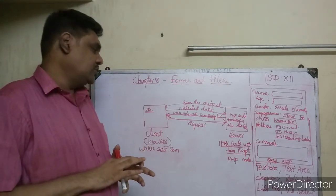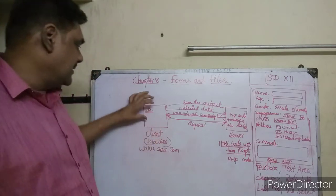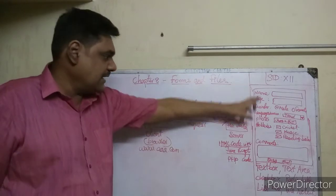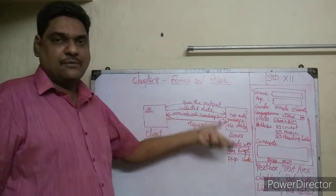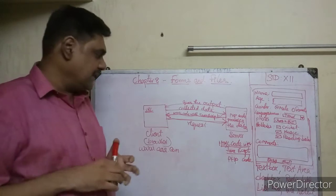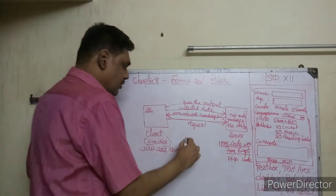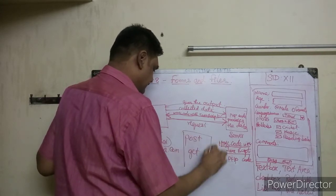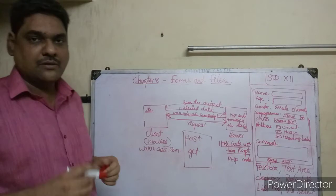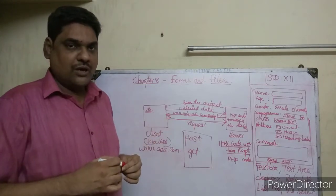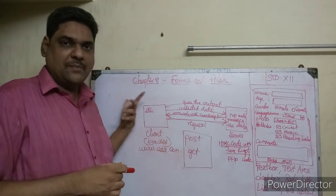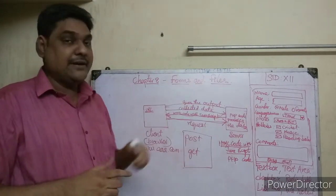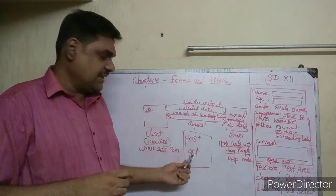Got it, my dear children? So, the data is sent from the client to the server. There are two methods to send data: one is called POST and the other is called GET. In the HTML code, you will mention which method to use.